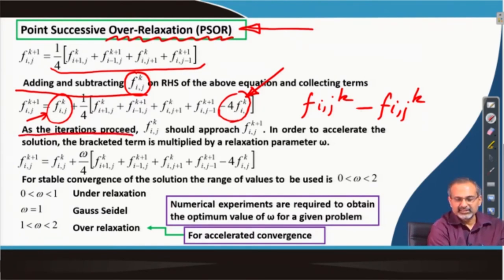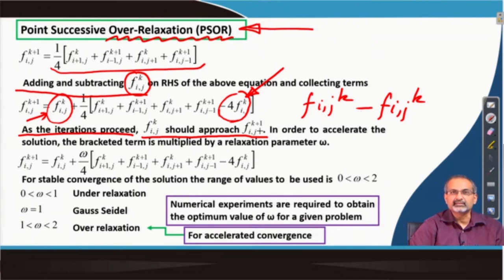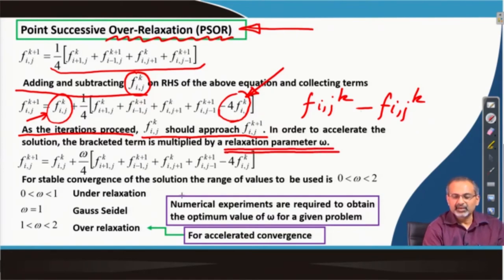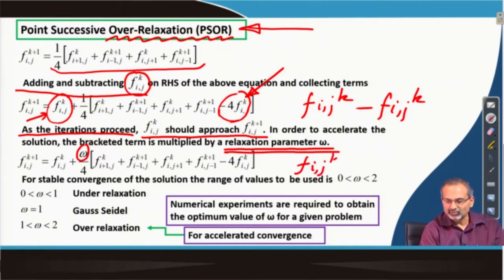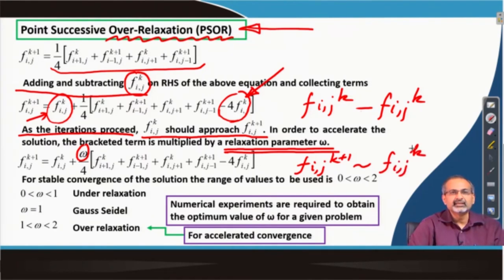What it says is that as the iterations proceed, ideally f_ij at the kth iteration level should be approaching f_ij at the k+1th iteration level, and the sooner it achieves that transformation from the kth to k+1th level, the sooner the iterations would converge. Can you really expedite this process? The process expediting would then happen through what we call the relaxation parameter omega. We are essentially multiplying the bracketed term with a factor omega so that we can send the bracketed term to 0 as quickly as possible. If it really reaches 0, then f_ij at k+1 will approach f_ij at k — that is essentially reaching convergence.